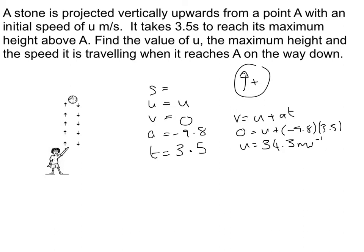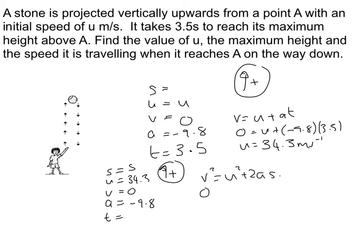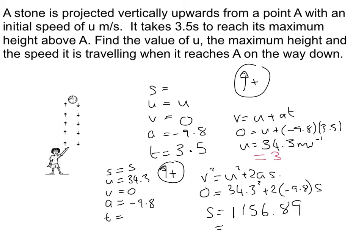What about the maximum height? SUVAT again, taking up to be positive. At the maximum height, velocity is zero. Initial speed is 34.3, trying to find displacement S, and acceleration is minus 9.8. Choosing the equation without T: V squared equals U squared plus 2AS. Substituting: 0 equals 34.3 squared plus 2 times minus 9.8 times S. Solving gives approximately 1200 metres to two significant figures, since G is only given to two significant figures.